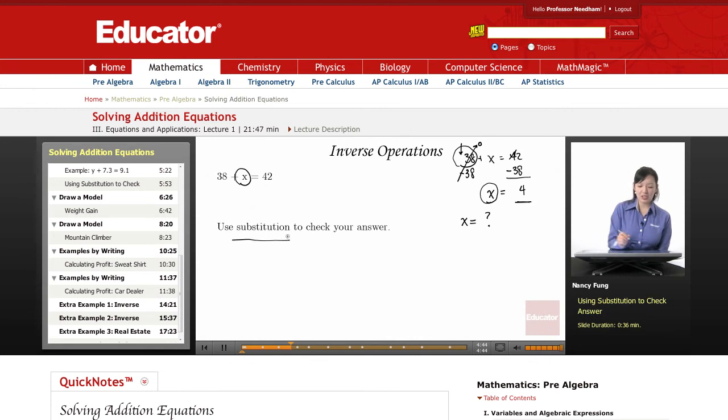It's a good idea to use substitution to check your answer. Although it takes a little bit longer, in the beginning when you're learning about solving equations, it's a really good way to check and make sure that you're understanding what it is that you're doing. So what that means is, I've just found out that x equals 4. So I'm going to go back to the original equation here and put 4 in. And if I do get the answer 42, that means I've done the problem correctly. 38 plus 4 equals 42. And 38 plus 4 is 42. So yes, it's true. I've done the problem correctly, and x does equal 4.